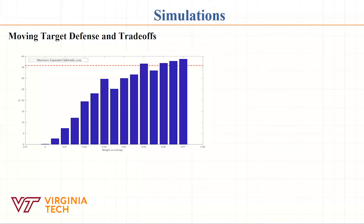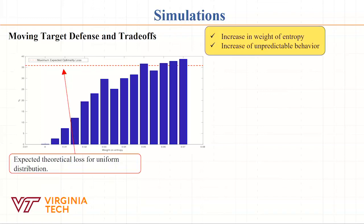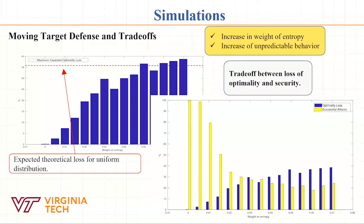What we found is: as you increase the weight on entropy, what is the optimality loss? In a learning mechanism, you can think of it as what price you are paying - what fuel you are wasting, what energy in general you can model in a performance metric. Also, as expected, increasing the weight of entropy increases unpredictable behavior.